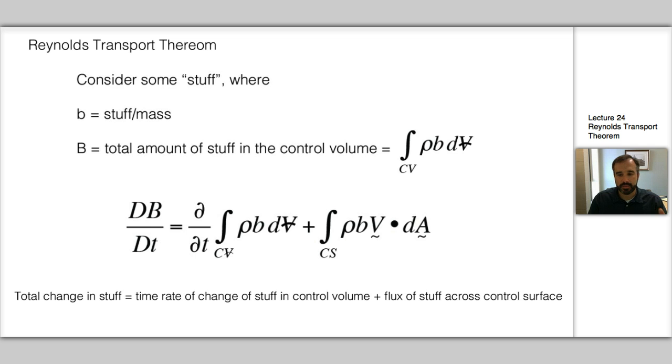So that means that capital B is an integral over the control volume of rho the density times some stuff b, integrated over the volume. The reason it's rho times b is because that converts the stuff per mass to a stuff per volume.